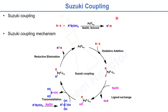Suzuki coupling is a carbon-carbon bond forming reaction between aliphatic or aryl halides and aliphatic or aryl boronic acids in the presence of palladium metal, a base, and solvent. Here is the Suzuki coupling reaction. The first step is oxidative addition, which forms an intermediate, followed by ligand exchange, then transmetallation, and finally reductive elimination. That's how the reaction mechanism works.